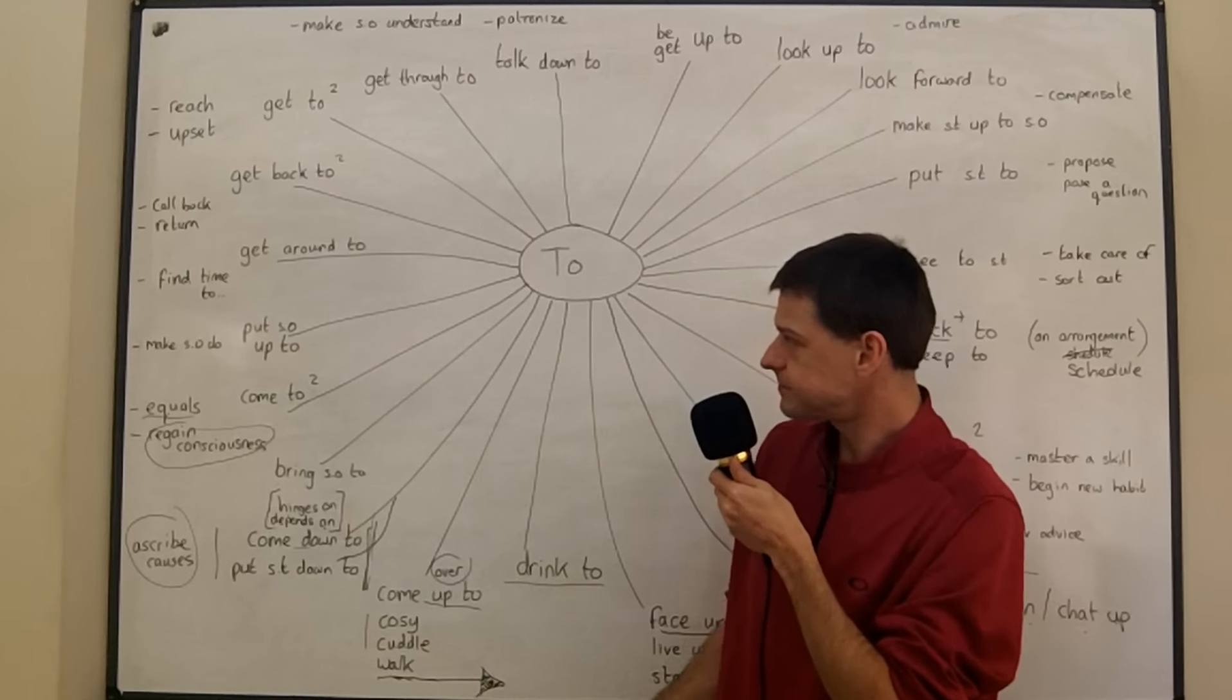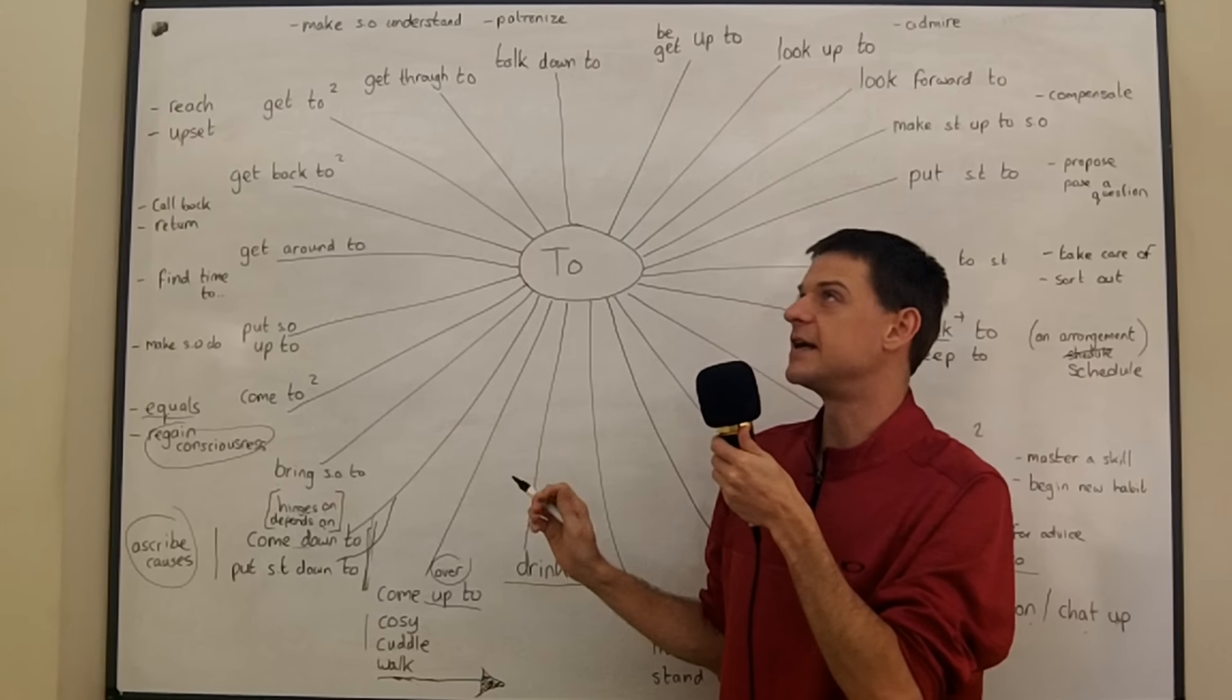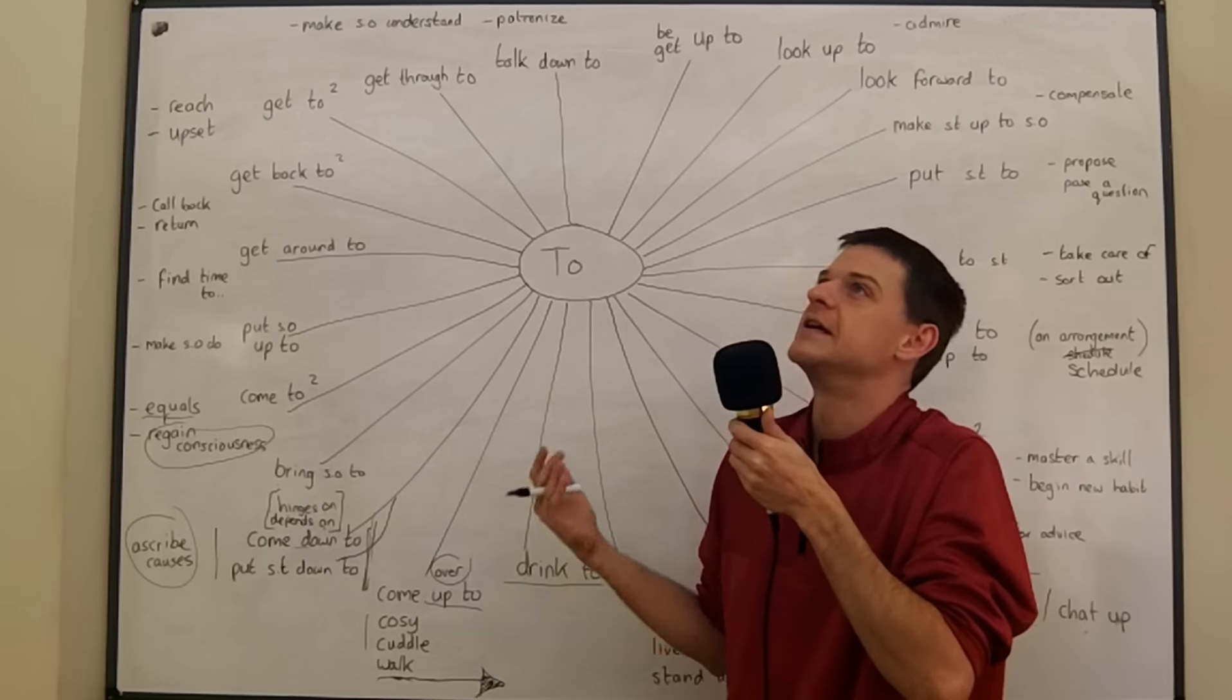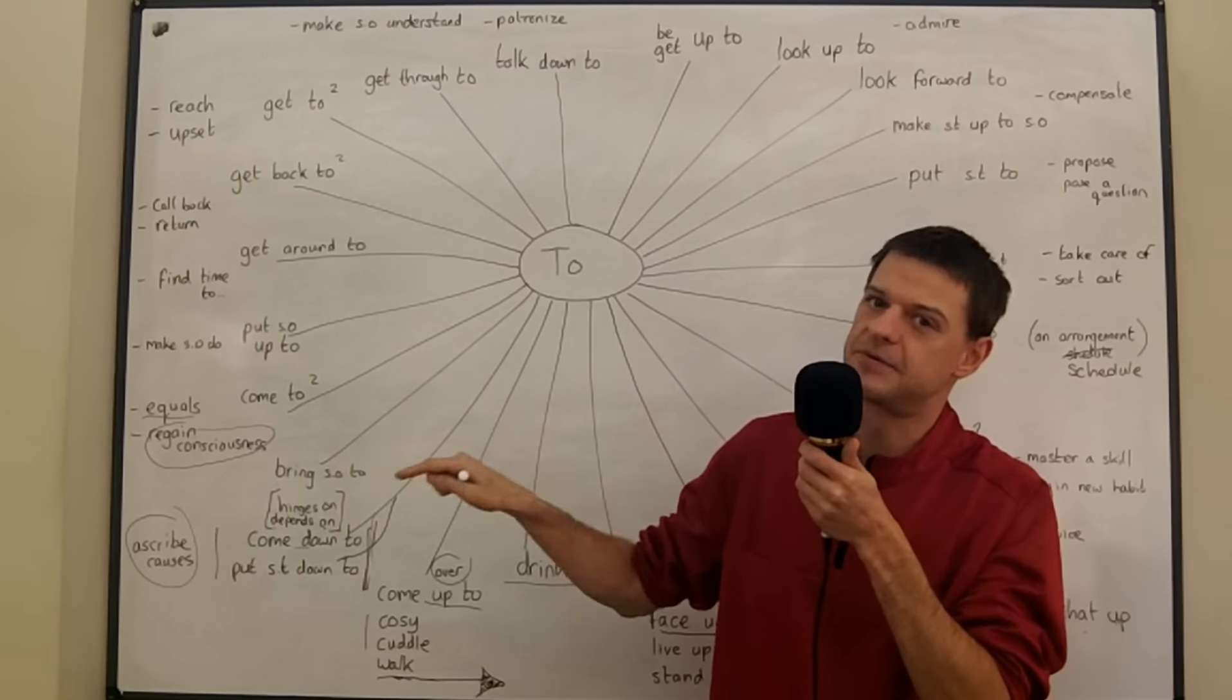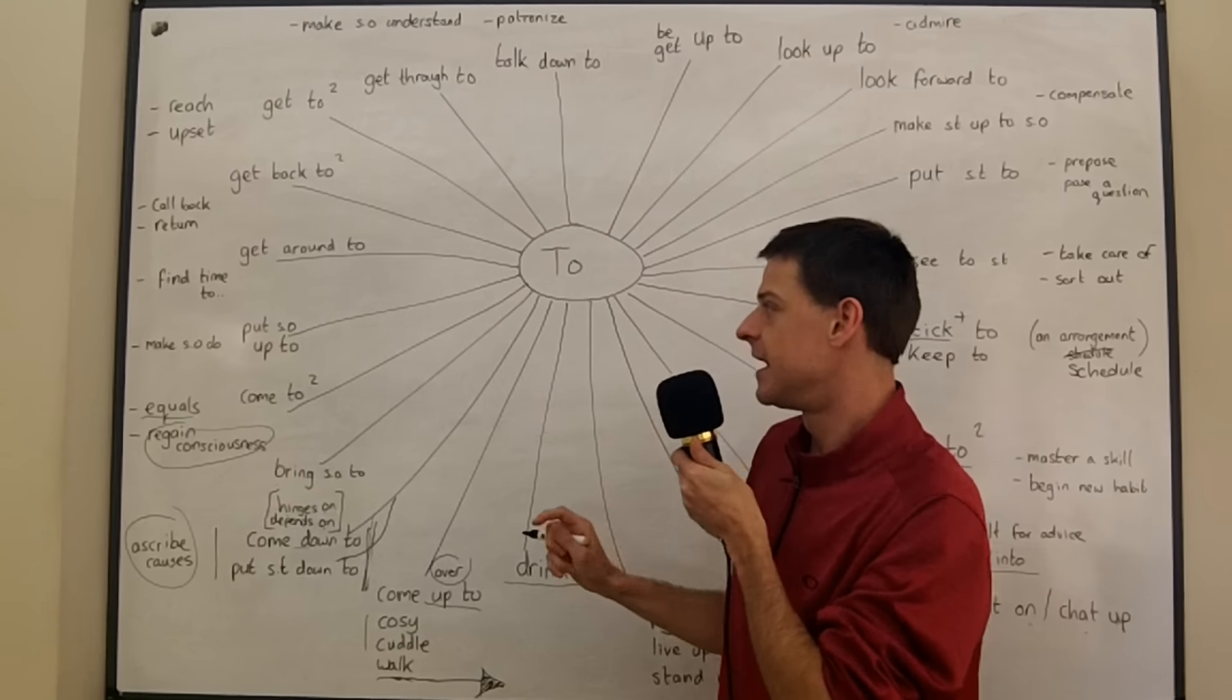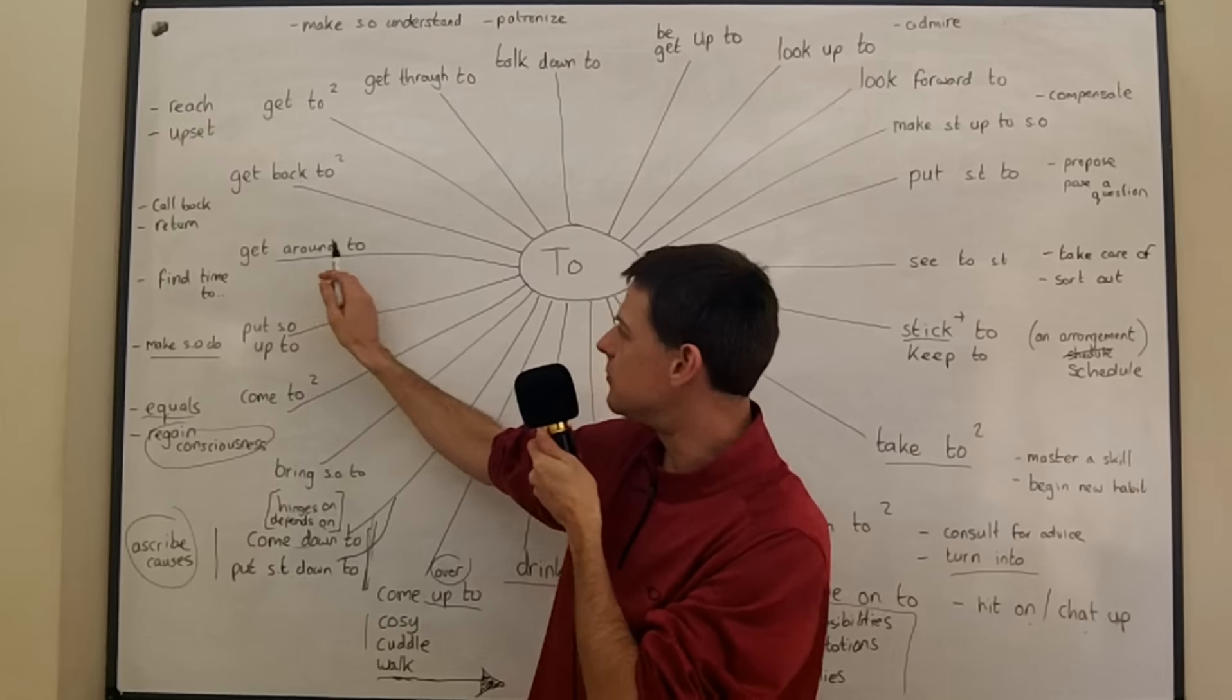Now if you put someone up to something you make them do something. It's quite often negative this, but maybe, this is difficult one to give examples for, but perhaps I think very often this is with youngsters. A youngster might try to get out of being punished by saying that another youngster put them up to it. So let's say a youngster might say I stole the sweets but it wasn't my idea, he put me up to it, he made me do it, he put me up to it. And that would mean he made me do this. So it basically makes someone do, but very often used with youngsters.